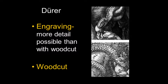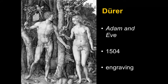Dürer also did engravings. With engraving, as we've said before, there's more detail possible than with woodcut. Here we have two details, supposed to be the same size — from a detail of the serpent in the Fall of Man — from an engraving by Dürer and from a woodcut by Dürer. With the engraving, you do have a greater range of textures, lines can be closer together, and you can truly do cross-hatching. This is Dürer's Adam and Eve from 1504. The placard tells us it was by Albrecht Dürer from Nuremberg and gives us the date. This is an engraving — one of Dürer's most famous engravings.